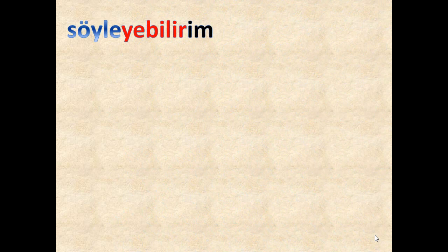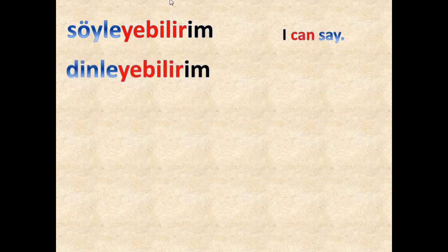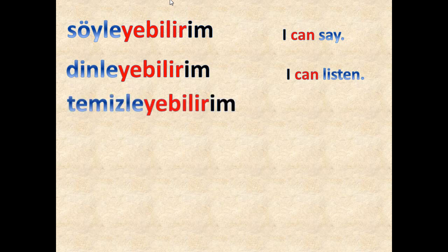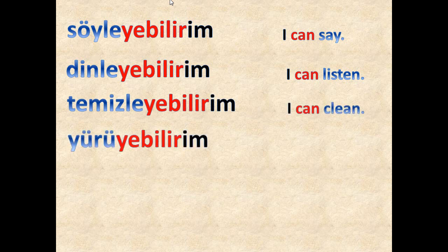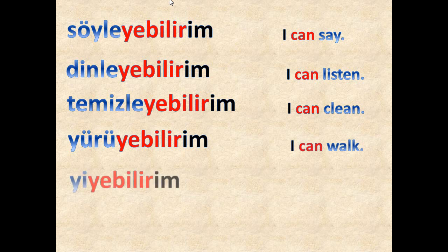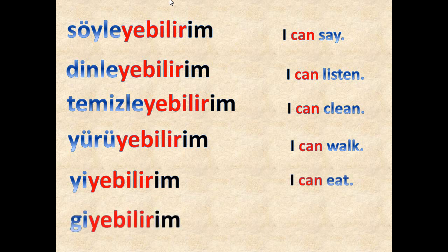Here we have verbs ending with a vowel, and we have the 'y' sound again between two vowels to make pronunciation easier. 'Söyleyebilirim' means 'I can say' or 'I may say'. 'Dinleyebilirim' means 'I can listen' or 'I may listen to something'. 'Temizleyebilirim' means 'I can clean'. 'Yürüyebilirim' means 'I can walk'. 'Yiyebilirim' means 'I can eat'. 'Giyebilirim' means 'I can wear' or 'I may wear'.